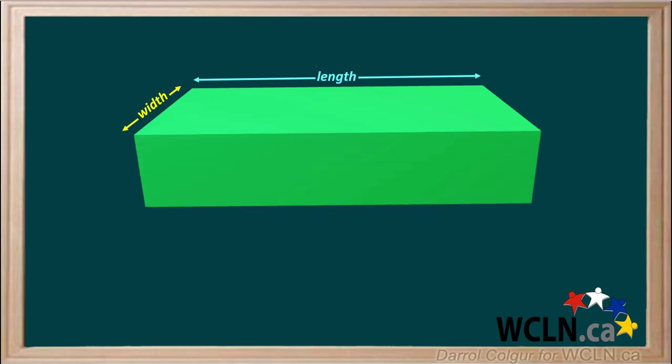Now we'll expand it into a rectangular solid. A rectangular solid has three dimensions: length, width, and height.